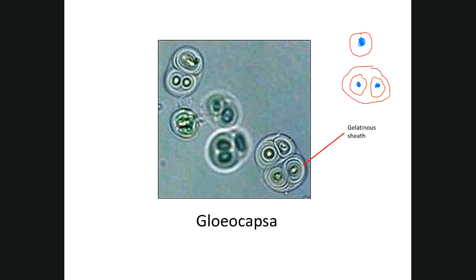Why maintain this gelatinous sheath, or what's the adaptation for this? It could be a flotation device, which keeps it close to the sunlight. It could be protection against predation from other cells, from eukaryotic cells, from protists, for example. It is harder to digest if it has this gelatinous sheath.